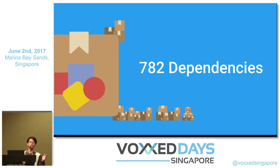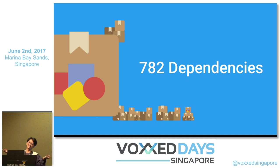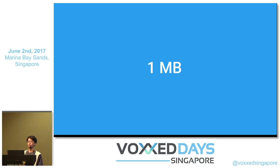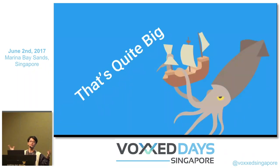Can anyone guess the size of the app after it's compiled? 1 MB? 2 MB? 5 MB? 10 MB? I'll tell you — it's 1 MB. The app I've created is 1 MB in size after compilation. That might seem small, but to me it's quite big — it's gigantic.